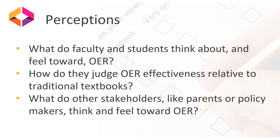Let's explore our last indicator: perceptions. In some ways, perception data can be easier to obtain than some of the other indicators explored earlier in this presentation. This kind of data includes faculty and student perceptions of their experience using OERs. Some questions you can ask are: what do faculty and students think about and feel towards OER? How do they judge OER effectiveness relative to their experience with traditional textbooks? You can even expand perceptions to include other stakeholders, like parents. Some of the most common ways to obtain this data are through surveys or reviews of textbooks.